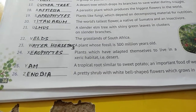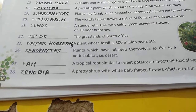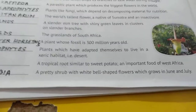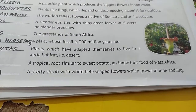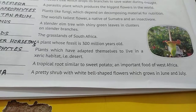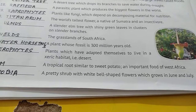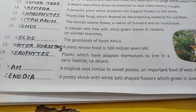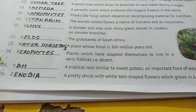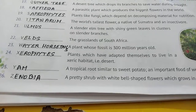Number twenty-five: a tropical root similar to sweet potato, an important food of West Africa. That root's name is yam.